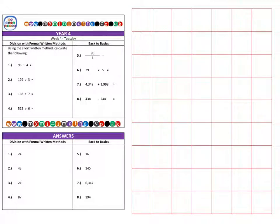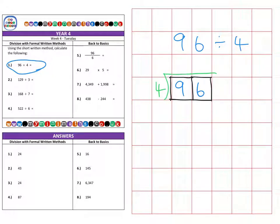On to the first question which is 96 divided or shared by 4. The first thing I'm going to do is create two boxes and I'm going to place my 96 into there, and then I'm going to write the 4, which is what I'm actually dividing by here. So here you can clearly see I have 96 divided by 4.